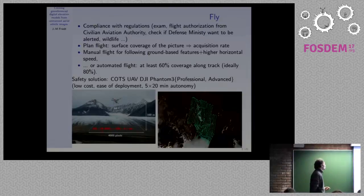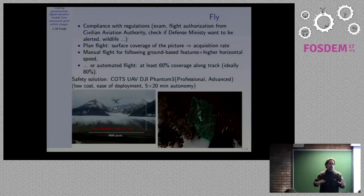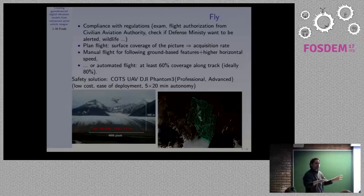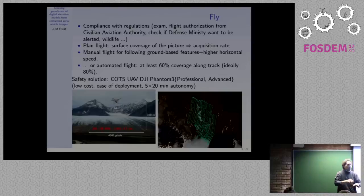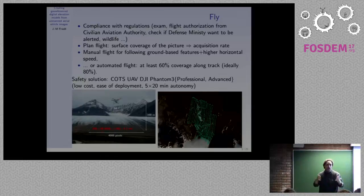Once you have all authorizations, you have to plan your flight. Flight planning for generating digital elevation models requires that your pictures overlap by at least 60%; MicMac recommends 80% overlap. Once you've decided on your horizontal velocity — in my case typically 10 meters per second — and know your altitude over the area, you can calculate how often to take an image. For example, flying with 100 meter coverage at 10 meters per second, I need to acquire one picture about every two seconds, which is why a 20-minute flight generates 600 to 900 images.